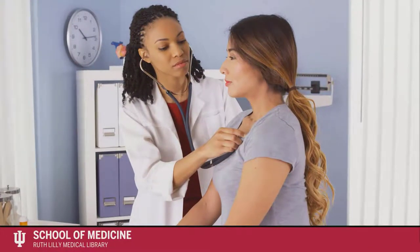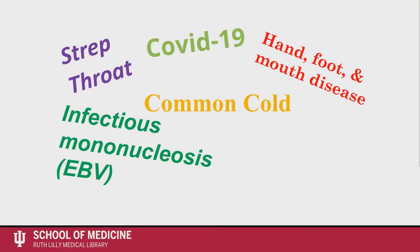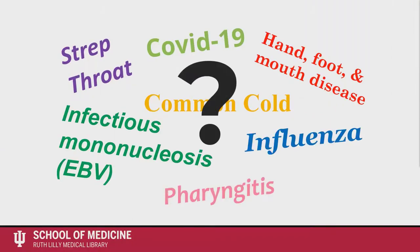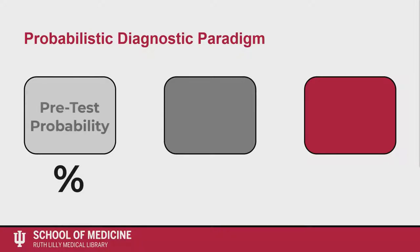Let's say after talking with a patient and performing a physical exam, you suspect a patient might have a disease, but you aren't quite sure. It could be a number of things, so you decide to perform a diagnostic test to confirm your suspicions. You are using the probabilistic diagnostic paradigm. After speaking with the patient and performing a physical exam, you might assign a disease probability percentage. This is called the pretest probability.